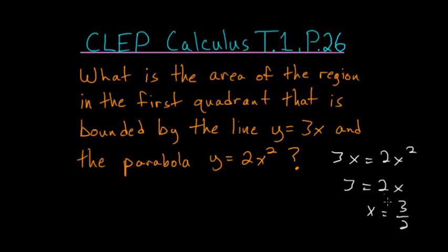So we know that these two curves intersect at an x value of 0 and 3 halves. And what we can do next is graph this so that we get a better idea of what we're trying to find.